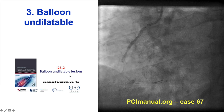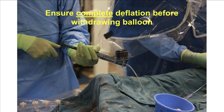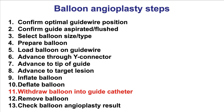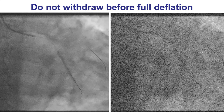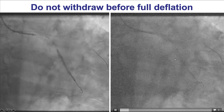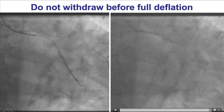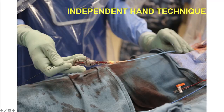Step number 10 is to deflate the balloon. Complete deflation should be achieved before withdrawing the balloon; some balloons deflate faster than others, and if there is more contrast in the mixture, deflation may take longer. If the balloon does not deflate fully before withdrawal, it may remain partially inflated and be impossible to completely deflate. Step number 11 is to withdraw the balloon into the guide catheter. It is critical to ensure the balloon is fully deflated, because withdrawing a partially inflated balloon leads to deep seating of the guide catheter, which can cause dissections or other complications. The independent hand technique can also adjust guide position, preventing deep engagement and associated complications.